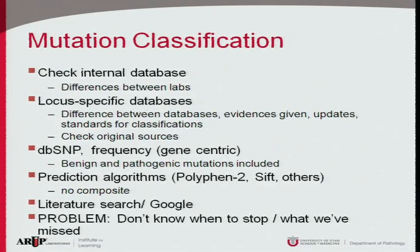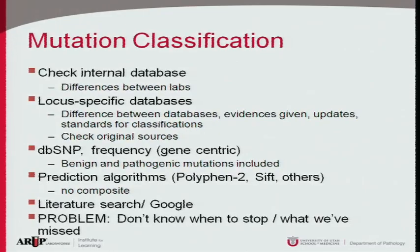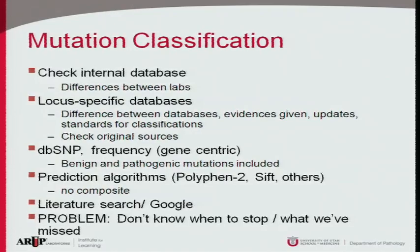Our current process starts by checking our internal databases — have we seen this variant before, how did we classify it, and what evidence did we find? This avoids repeating work. The problem is that different laboratories see different variation, so you get differences between labs and we need to become more standardized.